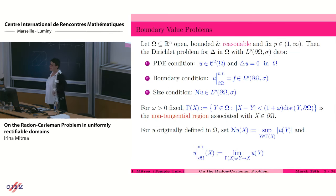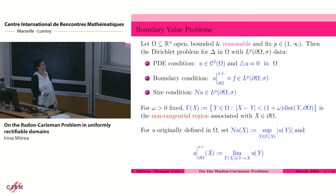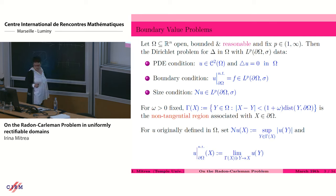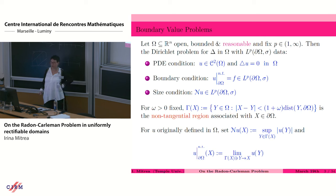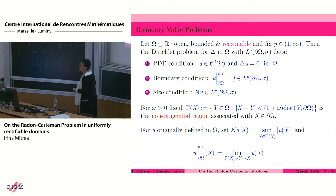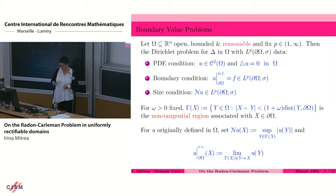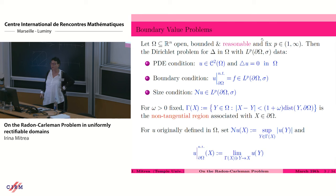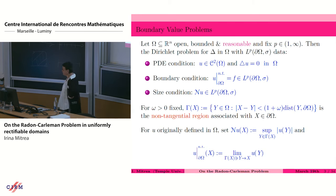To get started, let me set up the general setting. We're going to have here an open bounded reasonable domain — and what I mean by 'reasonable' is going to gradually change throughout this talk — and fix an integrability index p between 1 and infinity. Let's look at the Dirichlet problem for the Laplacian in the domain omega, with the data in the Lebesgue space of p-integrable functions on the topological boundary with respect to the surface measure.